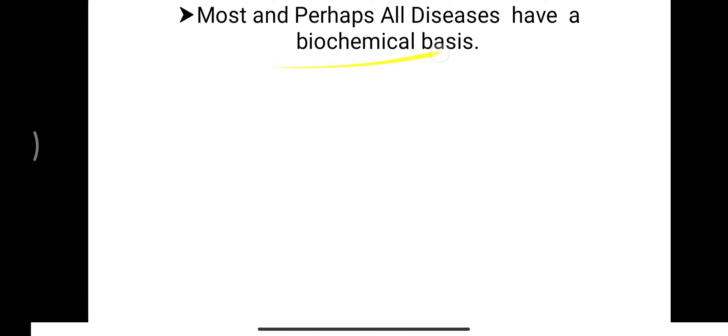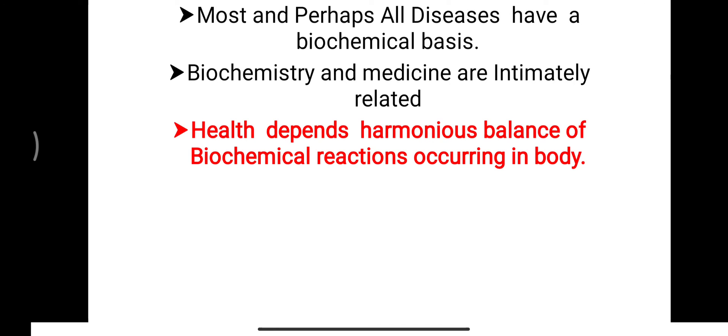Most and perhaps all diseases have a biochemical basis. For example, diabetes mellitus is one kind of disease. Similarly, atherosclerosis can lead to myocardial infarction or heart attack, and that is also explained with molecular terms and a biochemical basis. Biochemistry and medicine are intimately related — in fact, any medical subject is closely correlated with biochemistry. Health depends on the harmonious balance of biochemical reactions occurring in the body.